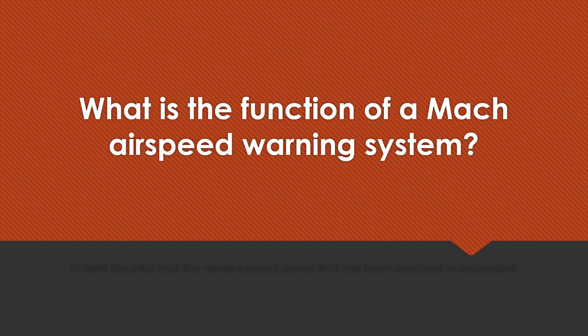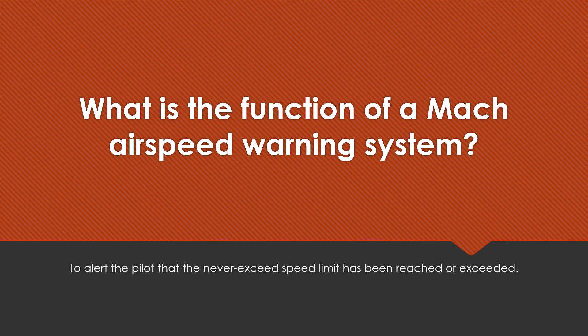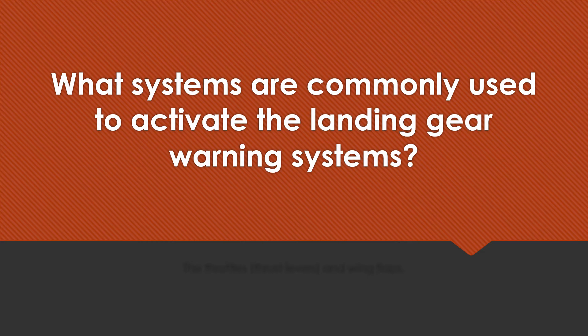What is the function of a Mach airspeed warning system? To alert the pilot that the never-exceed speed limit has been reached or exceeded. What systems are commonly used to activate the landing gear warning systems? The throttles or thrust levers and wing flaps.